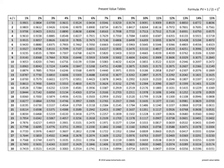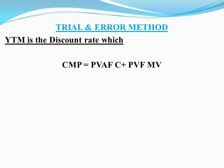In the last session we discussed how to calculate an approximate YTM using the formula method. Now we will look into how to calculate an accurate YTM using the trial and error method. We will use the present value factor table — equating the left-hand side and right-hand side — and see the solving process. When both sides are equal, the discount rate is called the YTM.